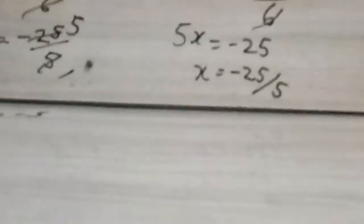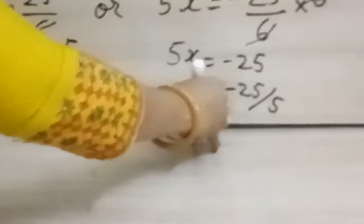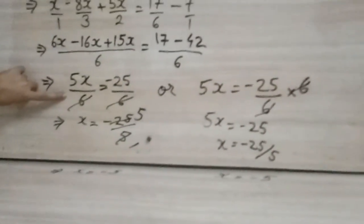So we will get the answer. What is the answer? X is equal to minus 5. This method is in comparative exam. We use single denominators. Clear to everyone?